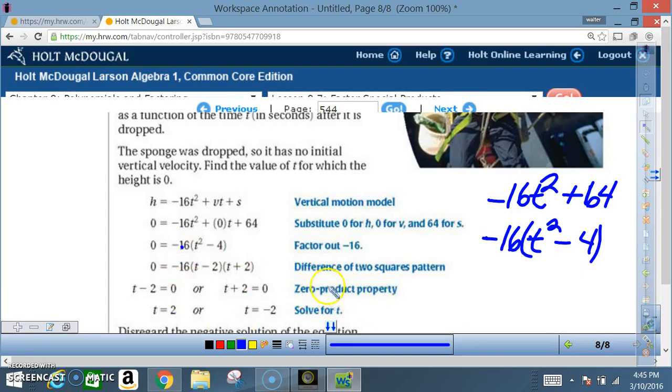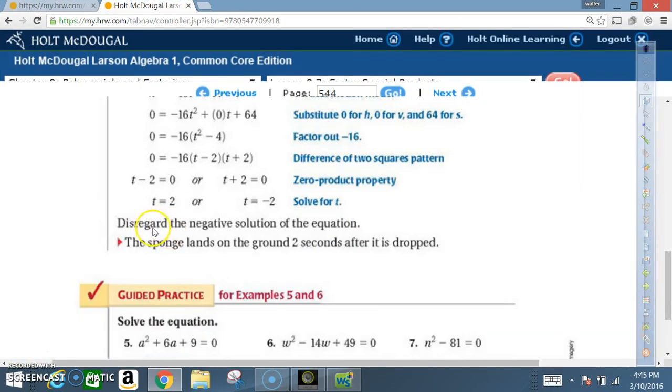Now we're going to use the zero property. And we know that negative 16 equal to 0 makes no sense. So that's gone. And so I'm left with t minus 2 is equal to 0, or t plus 2 is equal to 0. When I solve this, I end up with t is equal to 2, or I end up with t is equal to negative 2. Now we're going to disregard the negative solution of the equation. The sponge lands on the ground two seconds after it is dropped.